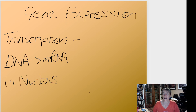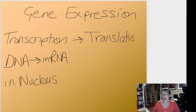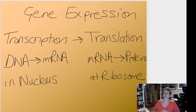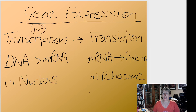The second part of gene expression is called translation, and we'll do that in another video. Translation is where you take the messenger RNA and use some other molecules to decode it into a protein — a chain of amino acids hooked together in the right order. This happens at a ribosome, and ribosomes are out in the cytoplasm of the cell. So the whole process is called gene expression: the first component is transcription, and the second is translation.